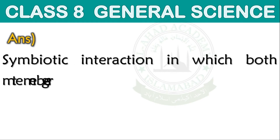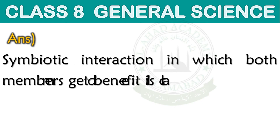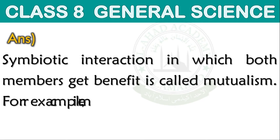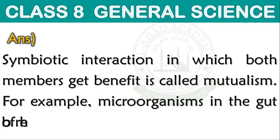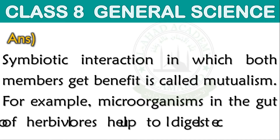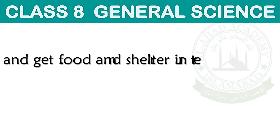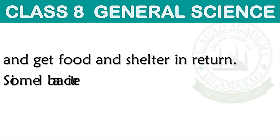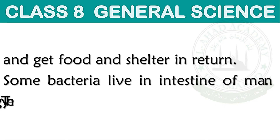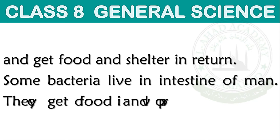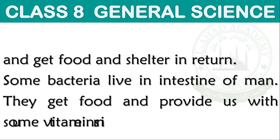A symbiotic interaction in which both members get benefit is called mutualism. For example, microorganisms in the gut of herbivores help to digest cellulose and get food and shelter in return. Some bacteria live in the intestine of man; they get food and provide us with some vitamins in return.